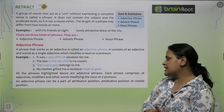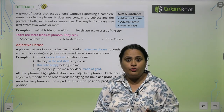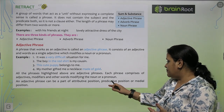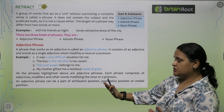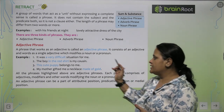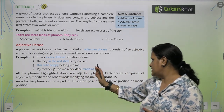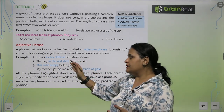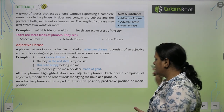An adjective phrase can be in an attributive position, a predicate position, or a medial position. It can come at the start, in the end, or in the middle of a sentence.